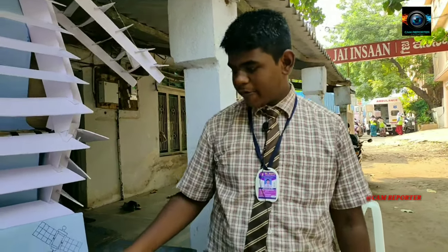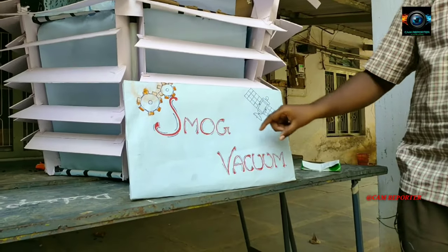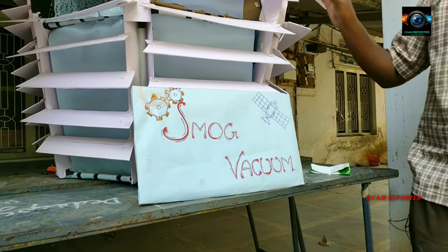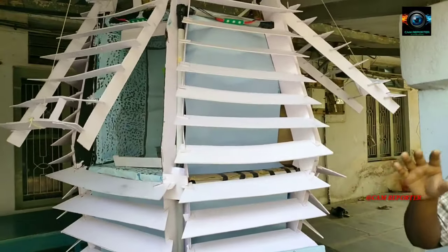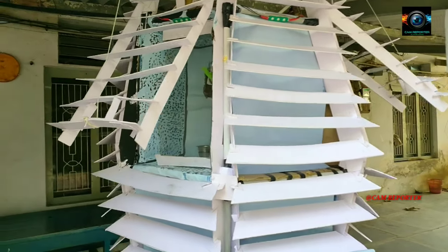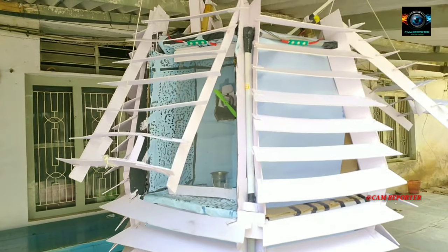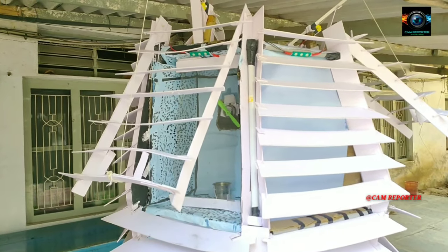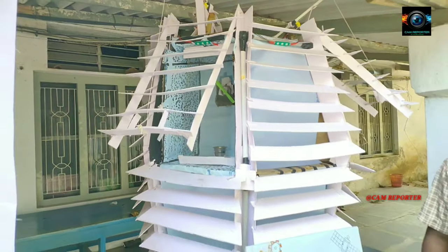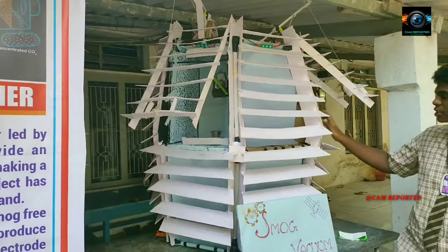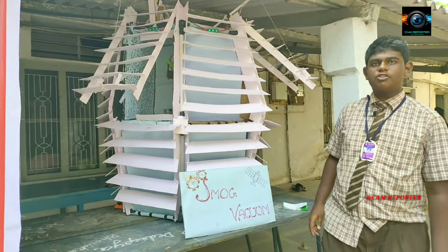My project name is Smog Vacuum. I am going to tell how it works and why it is useful. Smog Vacuum is used to reduce air pollution in the atmosphere. Nowadays we are seeing air pollution increasing day by day due to driving vehicles, so we want to use this type of vacuum to reduce the air pollution.